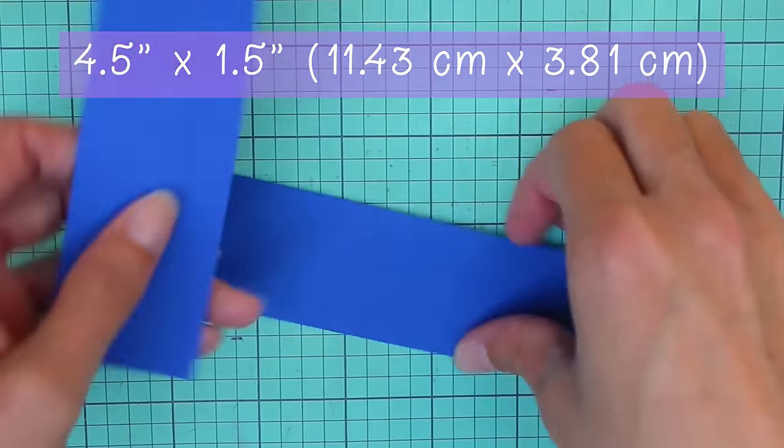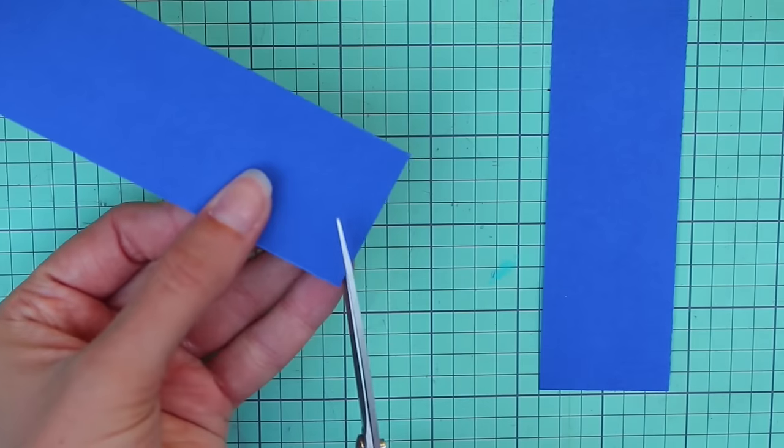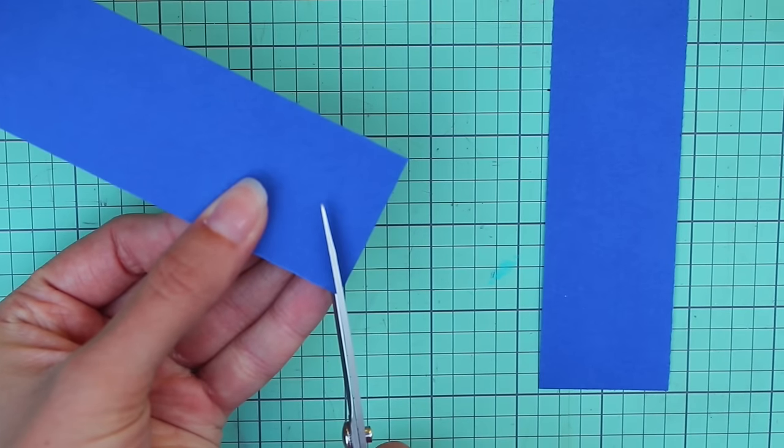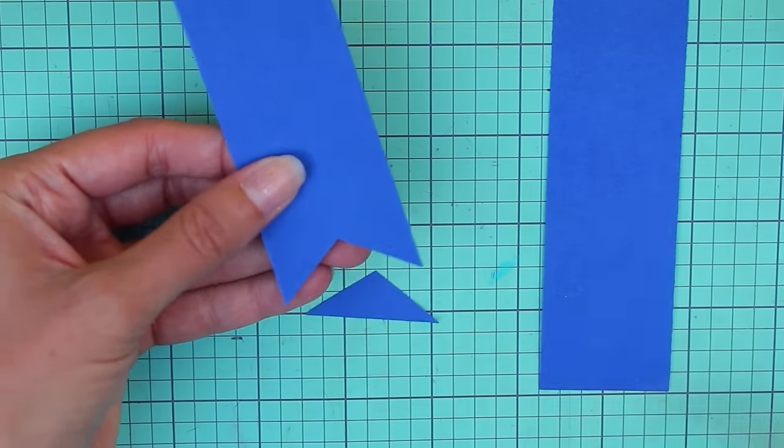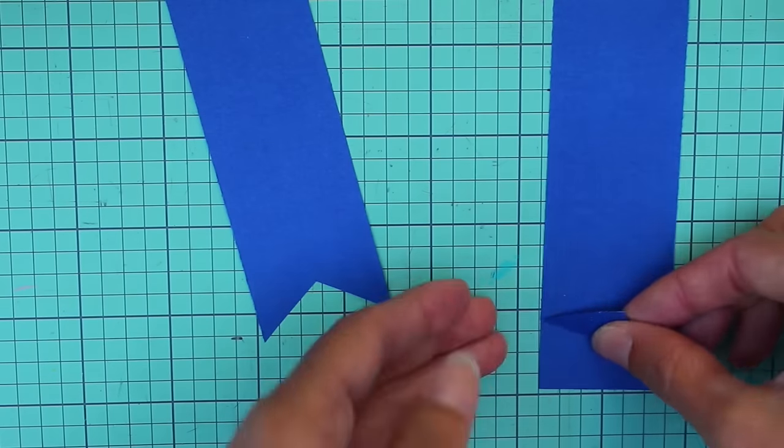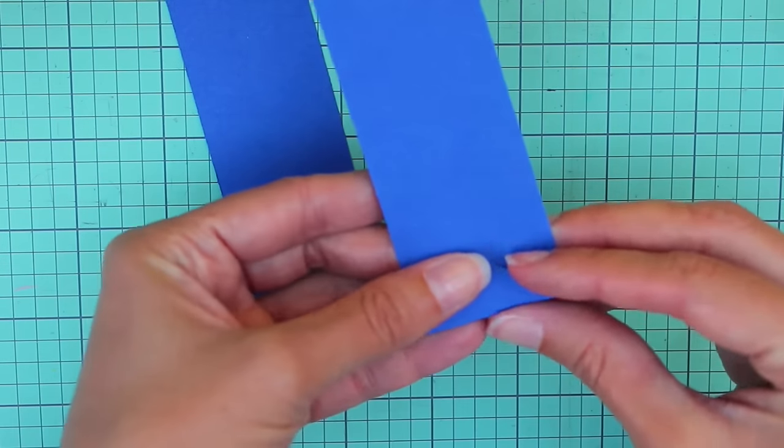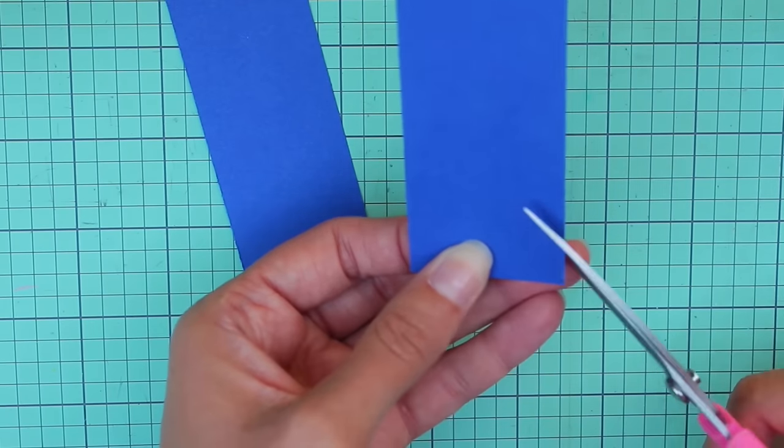Next, you'll need two pieces of paper that are four and a half inches wide by one and a half inches tall. Then you'll take each of those and cut a triangle into the bottom of one end. You can take the triangle you cut out of the other one to guide the cut on the second one so the triangles look the same.